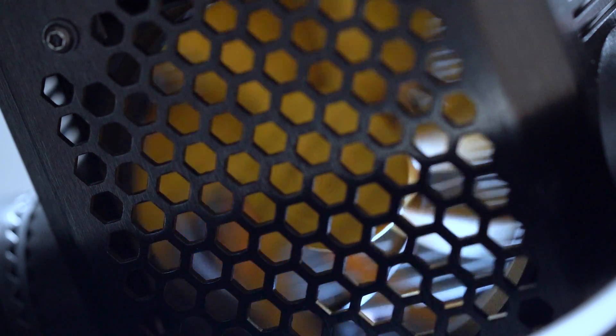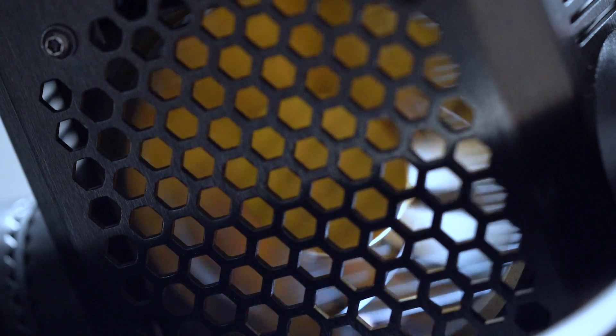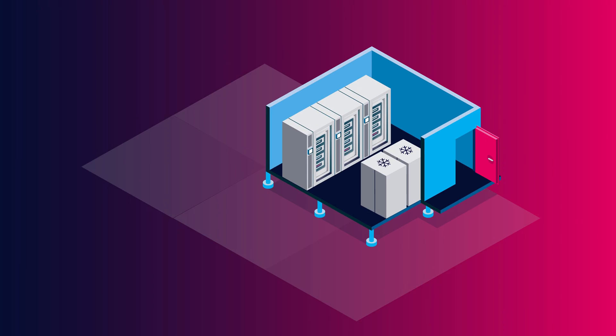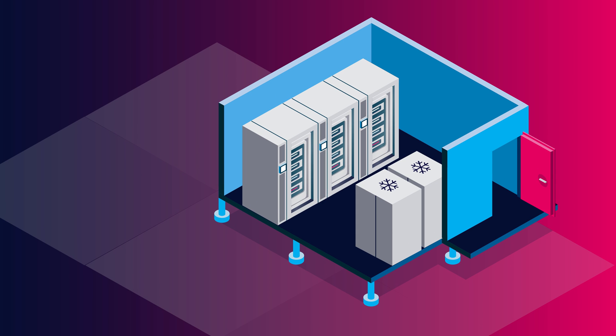As with any data center, it was important to keep the server room cool since the servers would automatically shut down if a certain temperature was exceeded. To keep it cool, it was equipped with standard but very ancient air conditioning units. It was designed redundantly with a main and backup AC unit. The AC worked by pulling air under the floor to cool it before bringing the cool air up in front of the server racks. But because of the age of the AC units, there was a problem — we couldn't directly monitor them because there was no network interface.